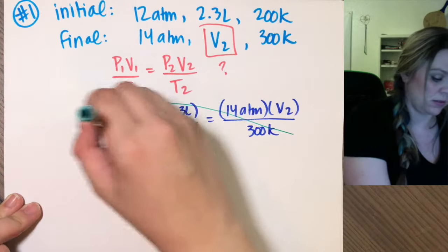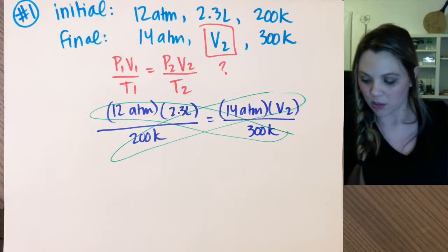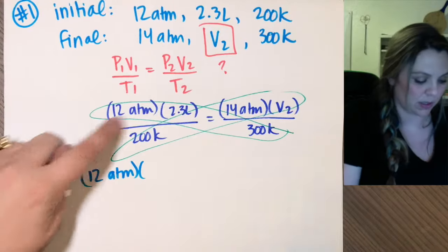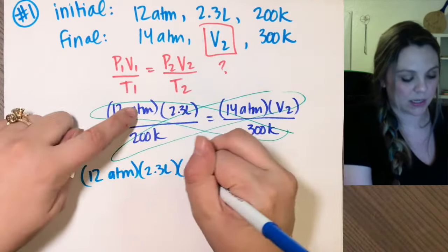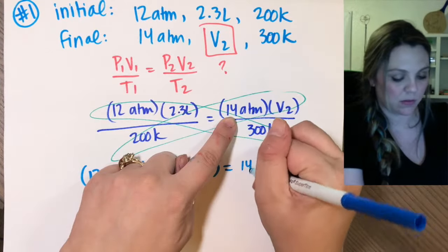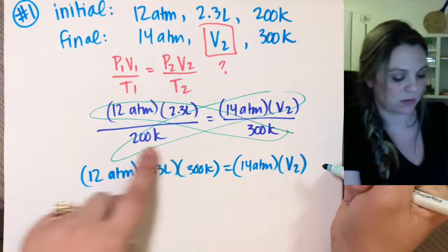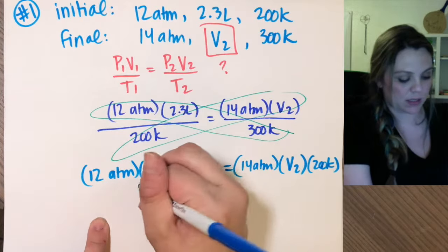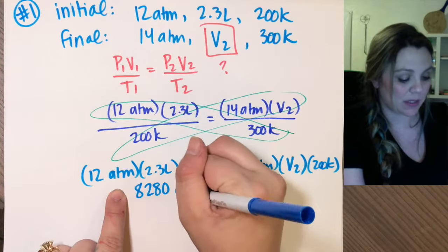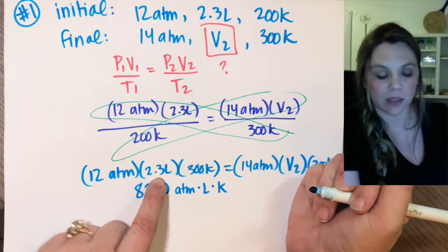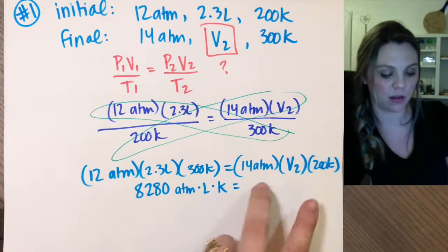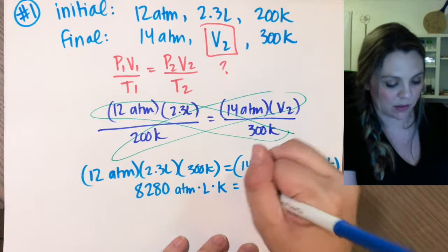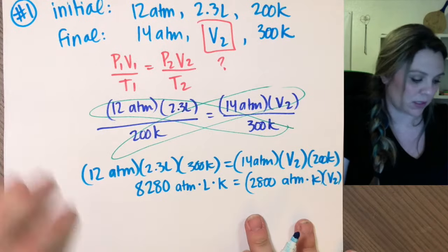You can do this the exact same way that you've solved all of the other ones. You can just butterfly method this thing. And you would get 12 atm times 2.3 liters times 300 Kelvin equals 14 atmospheres times 200 Kelvin. If you multiply all these dudes together, you would get 8,280 atmospheres times liters times Kelvin. That looks like the weirdest unit ever, but don't freak out, it'll cancel out and it'll be okay. 14 times 200 is 2,800 atmospheres times Kelvin times my unknown, times V2. I'm trying to solve for V2.